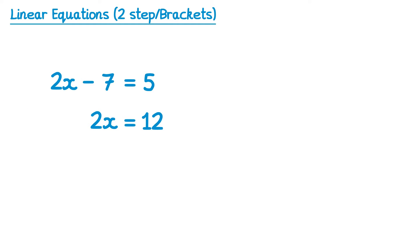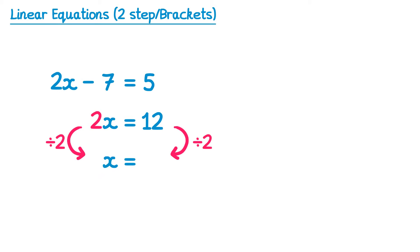What we now have is a one-step equation. On the left hand side we have 2x, which means 2 multiplied by x. So we're going to deal with this 2 by doing the inverse operation — divide by 2 — and we'll do this to both sides. 2x divided by 2 is just x, and on the right hand side 12 divided by 2 is 6. So the answer to this equation is x equals 6.